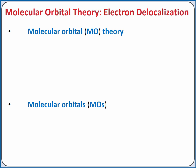In molecular orbital theory, we want to delocalize the electrons by modeling them as standing waves around multiple atoms in a molecule, thus creating molecular orbitals as opposed to atomic orbitals.